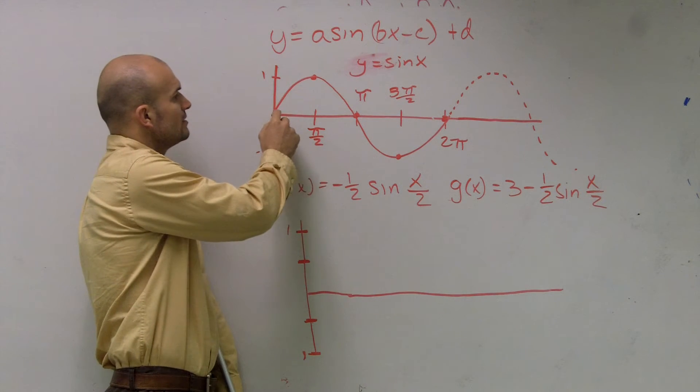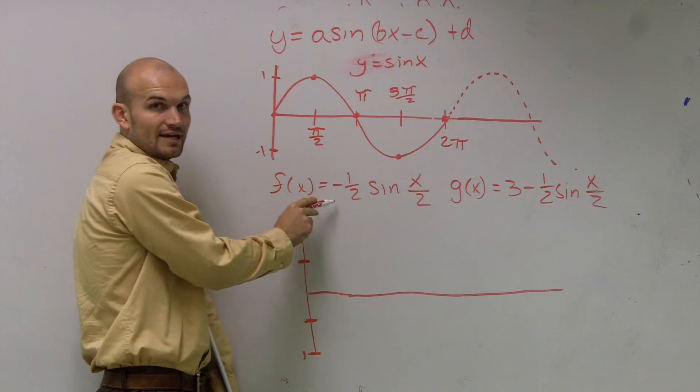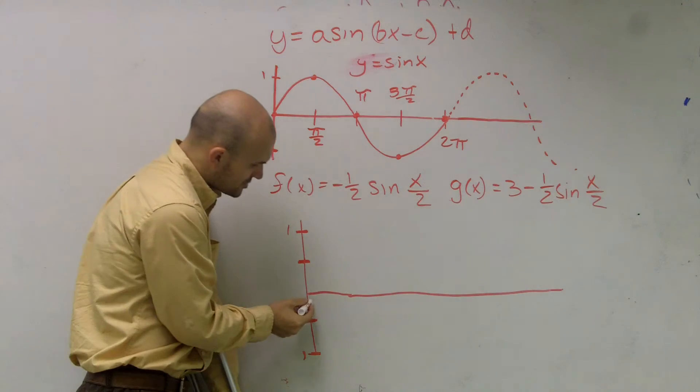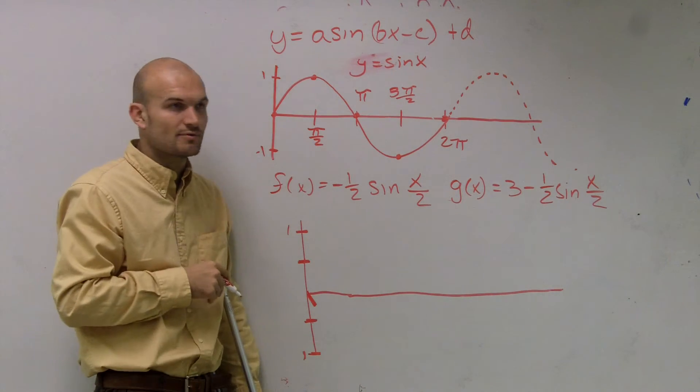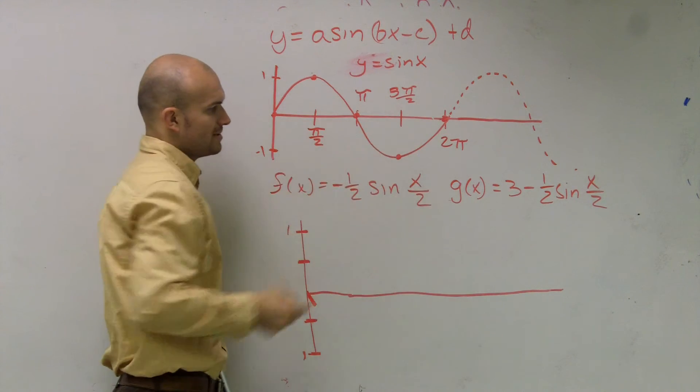Then usually we always started down and went up. Well, now we need to make sure that since I have a negative, that's going to tell me my amplitude is now going to be reflected down. So the first thing I'm going to do is go down. So it might be helpful just to write that down so you remember it. Now I need to write in what is my four points going to be?